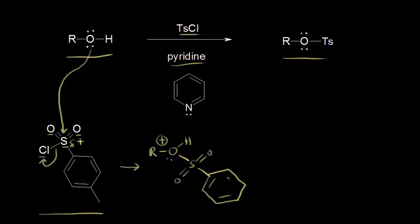We have our pi electrons right here and then a methyl group. Let's go ahead and follow those electrons. The electrons in magenta on the oxygen formed a new bond to the sulfur. In the next step, we're going to take the proton off the oxygen, and so the pyridine is going to function as a base. The lone pair of electrons on nitrogen is going to take this proton, leaving these electrons behind on the oxygen.